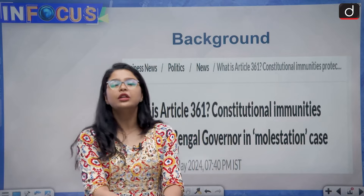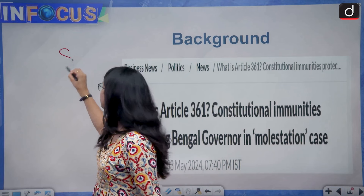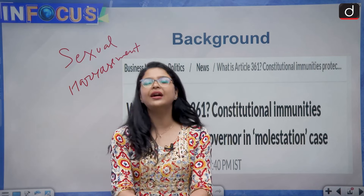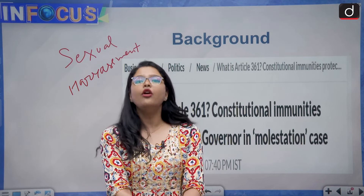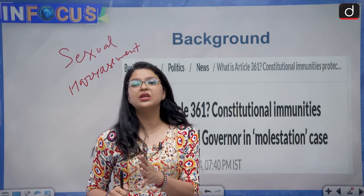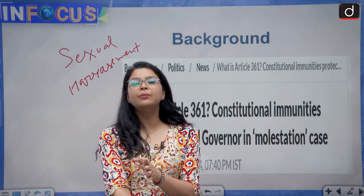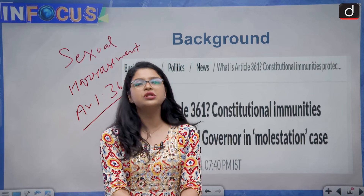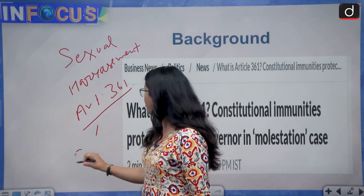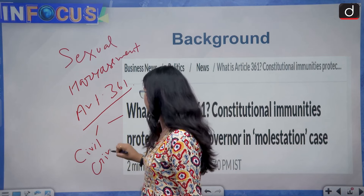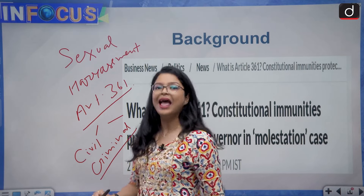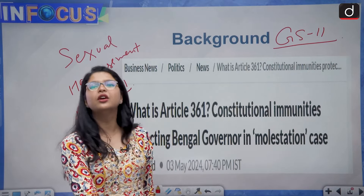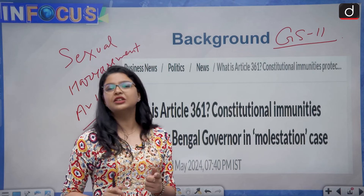If I talk about the background of today's topic, basically a complaint alleging sexual harassment has been filed against the current governor of West Bengal. However, the police cannot name him as an accused. The police cannot initiate an investigation against him by virtue of Article 361 of the Indian Constitution, which talks about certain constitutional immunities available both in civil and criminal cases. This topic is very important from the perspective of your GS2 paper — polity and governance.